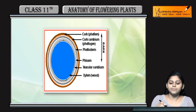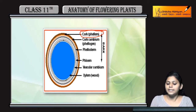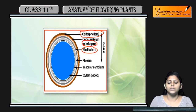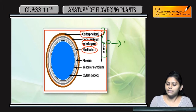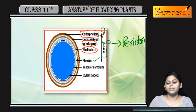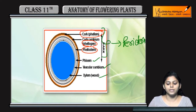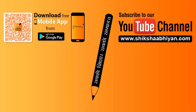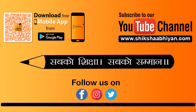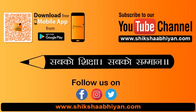You can see here: the outer layer is cork phellem, then phelogen, and then pheloderm. These three together form the periderm, the outer layer. Inside the periderm, phloem, vascular cambium, and xylem are present.